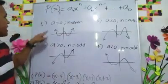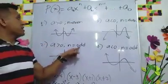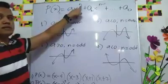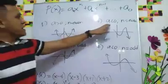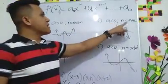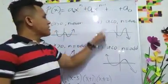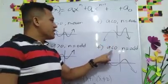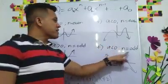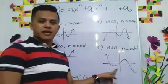Next, if a is greater than 0 but n is odd, let's say a is like 1 and then this one is 5, it looks this way. The graph must be like this. If a is less than 0, that means negative, and then n is even, the graph looks this way. If a is less than 0, again negative, and then n is odd, the graph looks this way.